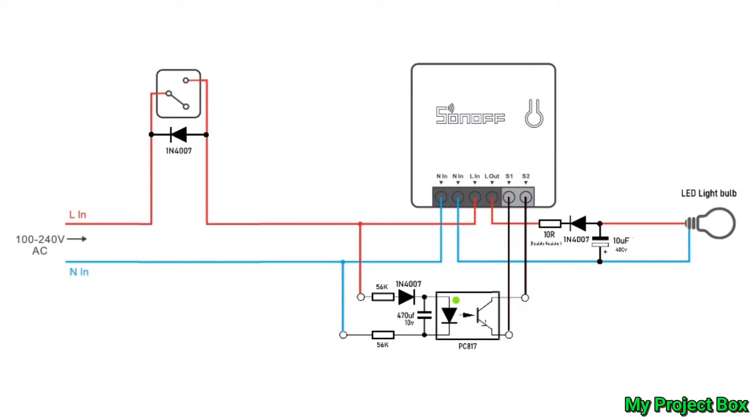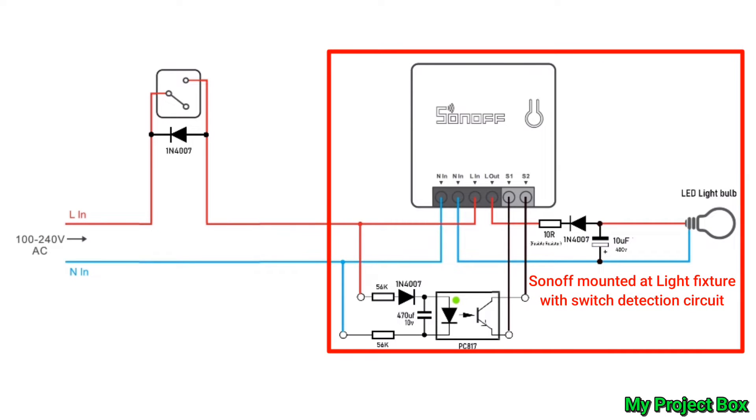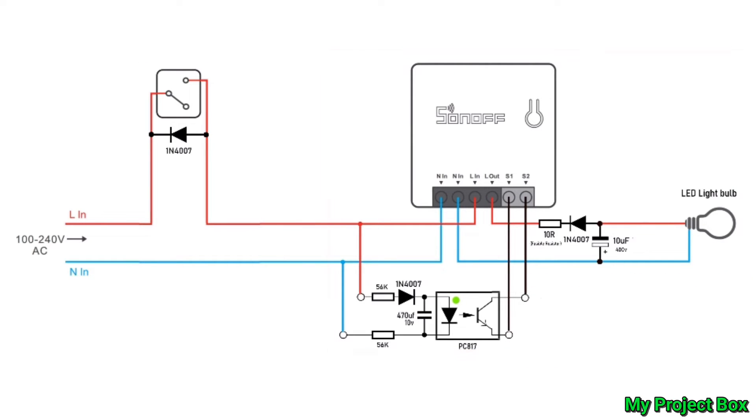So here's my circuit again. This allows you to put the Sonoff by the light fixture itself so you don't have to worry about a neutral supply not being behind the light switch and you could also possibly have a better Wi-Fi reception because the Sonoff is now up by the light fixture.